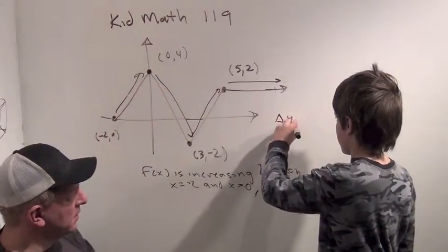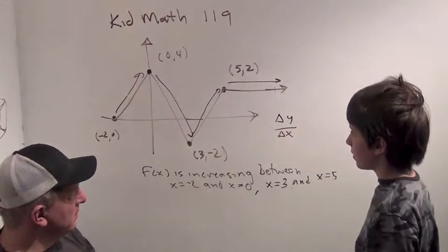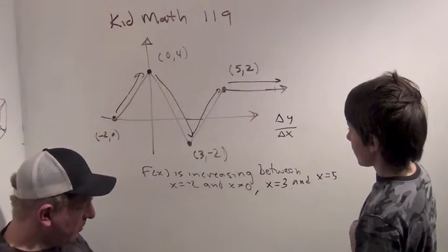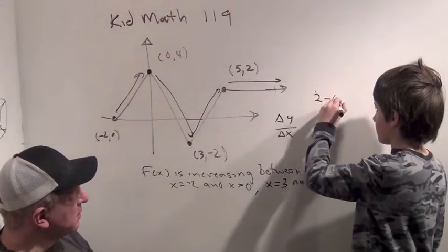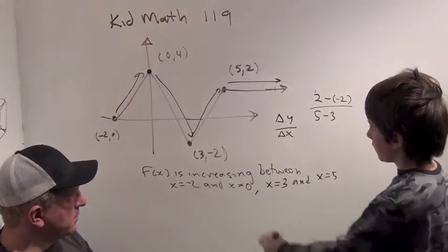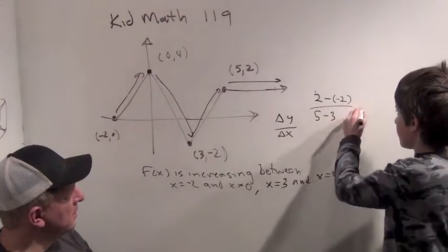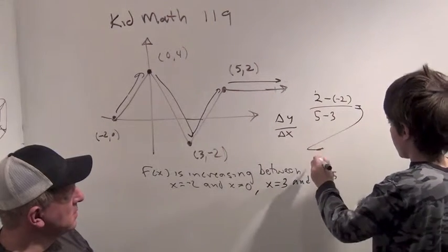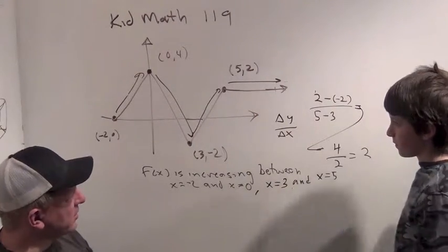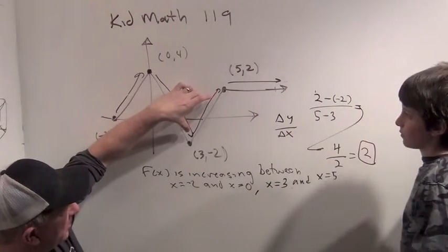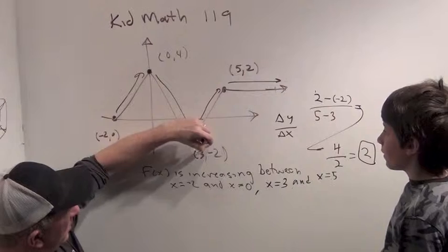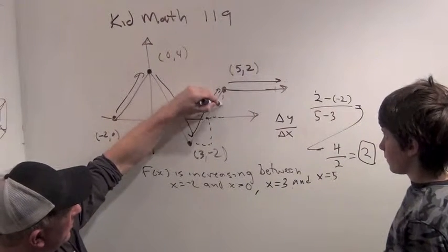Well, the slope is change in y over change in x. So our points are 5, 2, and 3 minus 2. So it's 2 minus minus 2 over 5 minus 3. I subtracted it this way. Okay. Which is 4 over 2, which is 2. Okay, good. So we found the slope of this line segment here is actually 2. Which means for every 1 we go over, we go up 2.